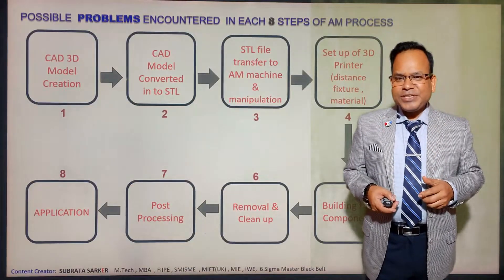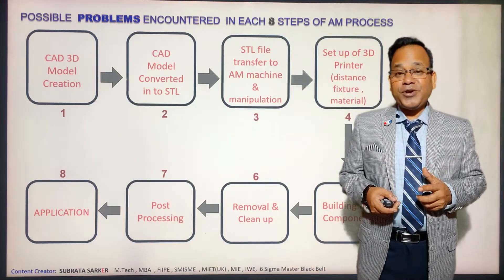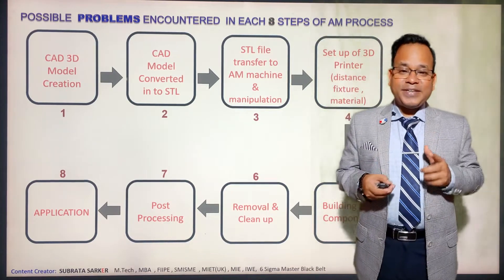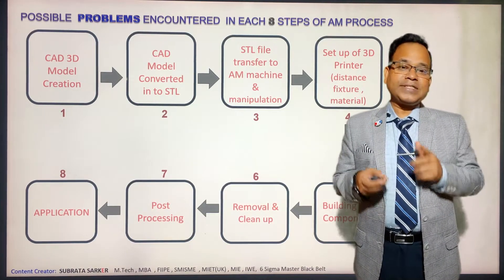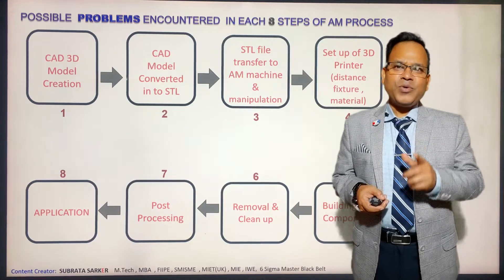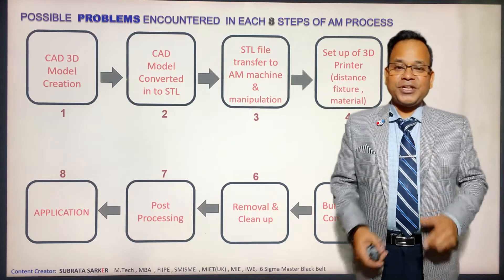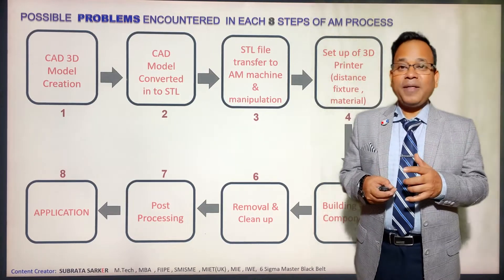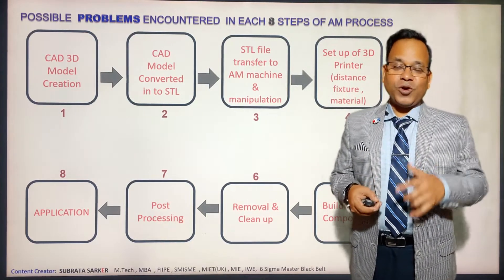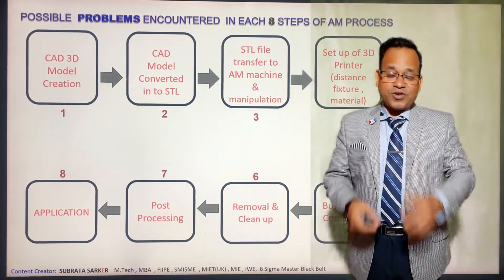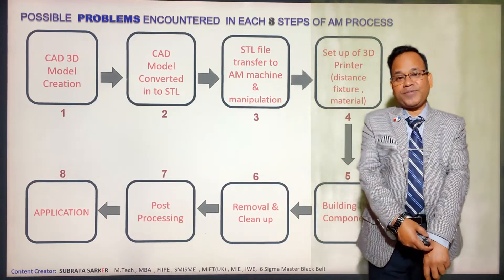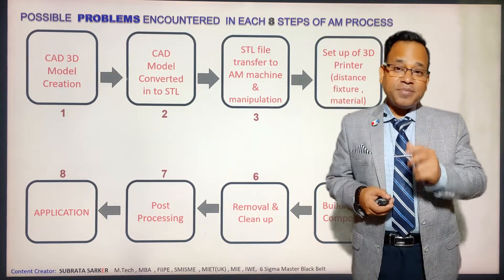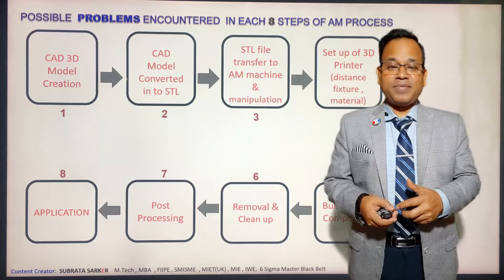As I discussed in Session 1, what are the basic eight steps in 3D printing or additive manufacturing? In this session, I will discuss the difficulties or problems that arise in those steps. Step one is 3D CAD model generation. Whatever component you are going to make with 3D printing, you need a 3D CAD model — whether created with software like Pro-E, CATIA, SolidWorks, Creo, UniGraphics, or by 3D scanning.